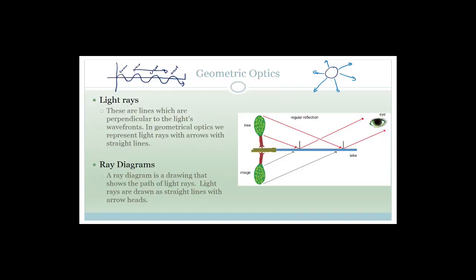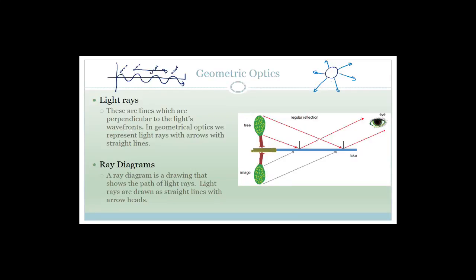This is an example of reflection. Light comes in from the sun, gets reflected, and as far as our eyes are concerned, the light comes from the tree, hits the water, and is then reflected back to the eye. Similarly, a light ray coming from the top of the tree gets reflected on the lake and bounces into our eye.